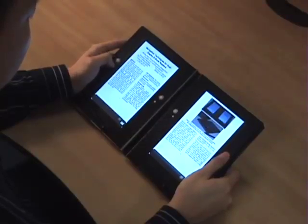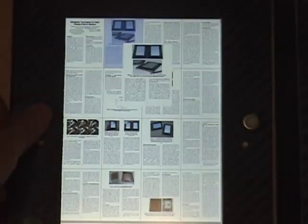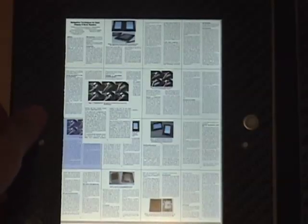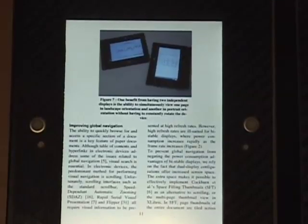To perform global navigation, users can call up space-filling thumbnails to rapidly locate and jump to a page of interest. In larger documents, where thumbnail size is small, an enlargement of the highlighted thumbnail is displayed on the side. Pressing down on the trackball changes to the highlighted page.